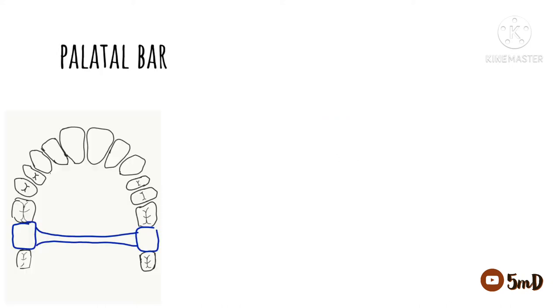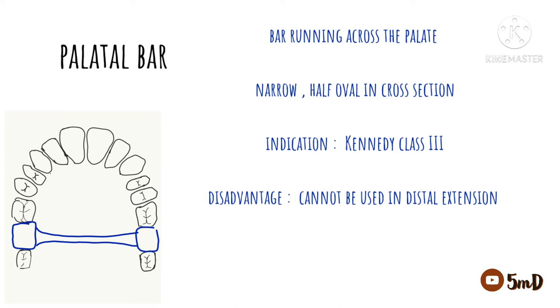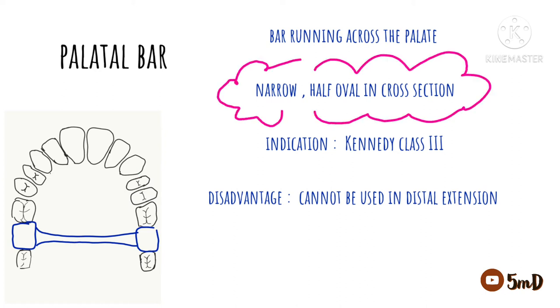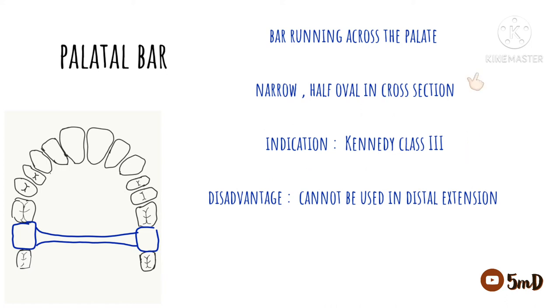The palatal bar is the first type. As the name suggests, it is a bar running from one side of the palate to the other. Since it is a major connector, the shape is half oval in cross-section. It is narrow, and the indication for using a palatal bar is only in Class 3 situations — Kennedy Class 3.